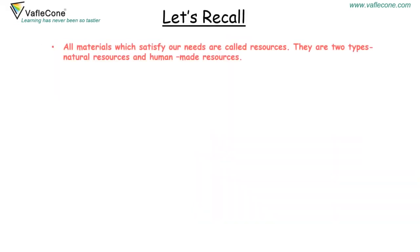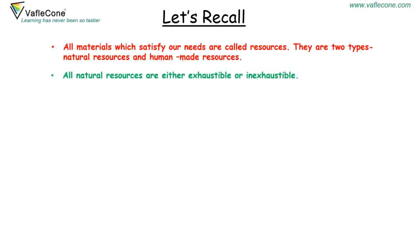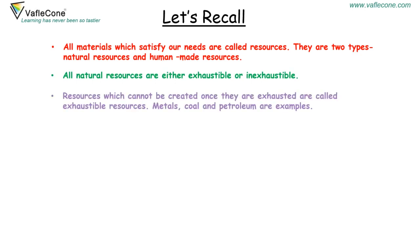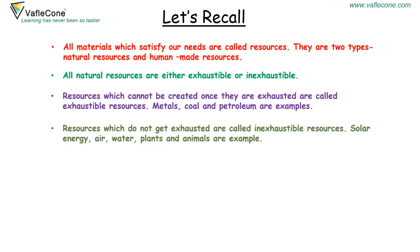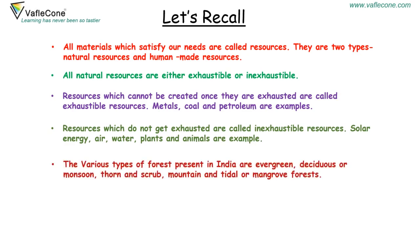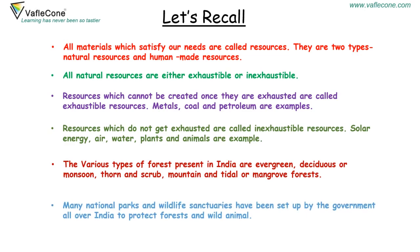Let's recall: All materials which satisfy our needs are called resources — of two types, natural resources and human-made resources. All natural resources are either exhaustible or inexhaustible. Resources which cannot be created once exhausted are called exhaustible resources; metals, coal and petroleum are examples. Resources which do not get exhausted are called inexhaustible resources; solar energy, air, water, plants and animals are examples. The various types of forests in India are evergreen, deciduous or monsoon, thorn and scrub, mountain and tidal or mangrove forests. Many national parks and wildlife sanctuaries have been set up by the government to protect forests and wild animals.